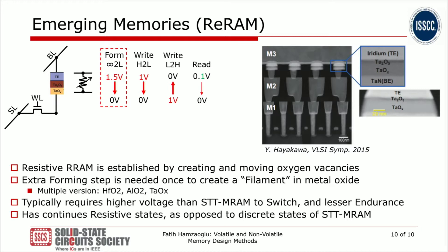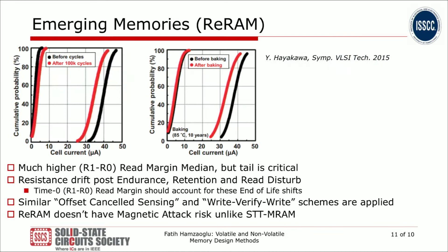One difference in RRAM is that when it comes out of the fab, the device is in a gigaohm resistance state. You need to apply a high voltage first to form the filament; after that one-time forming step, you pass oxygen vacancies back and forth to write a 1 and 0. RRAM typically requires higher voltage operation than STT-MRAM and has lesser endurance. It also has continuous resistive states unlike STT-MRAM which has more discrete states. Resistance drift after 100,000 write cycles and after baking — which mimics 10 years of non-volatile retention — must both be accounted for in end-of-life read margin planning.